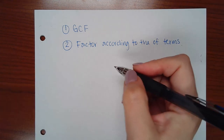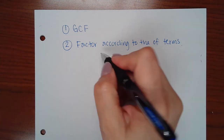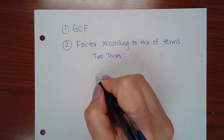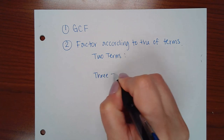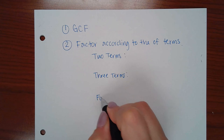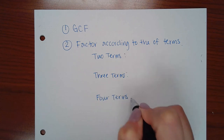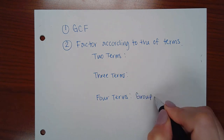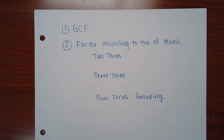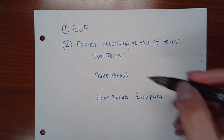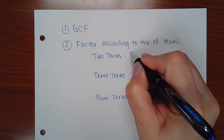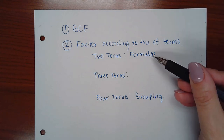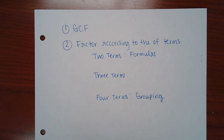There are three options: if you have two terms, three terms, or four terms. If you have four terms you will use the grouping technique, and sometimes you may need to rearrange terms. If there are two terms, there's a series of formulas that you'll have to use if they apply.